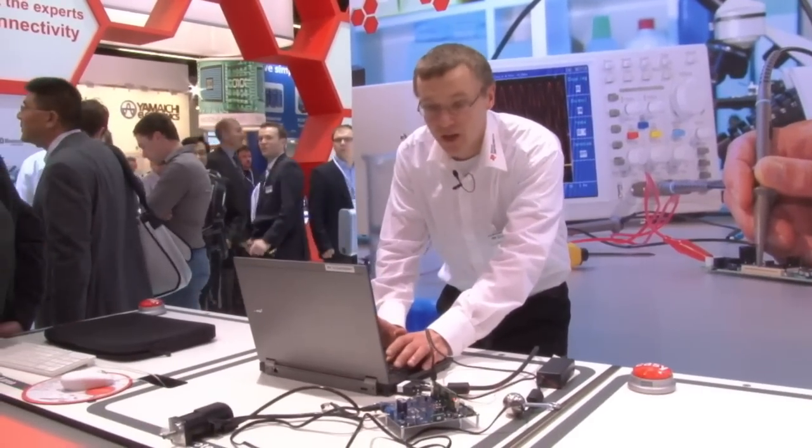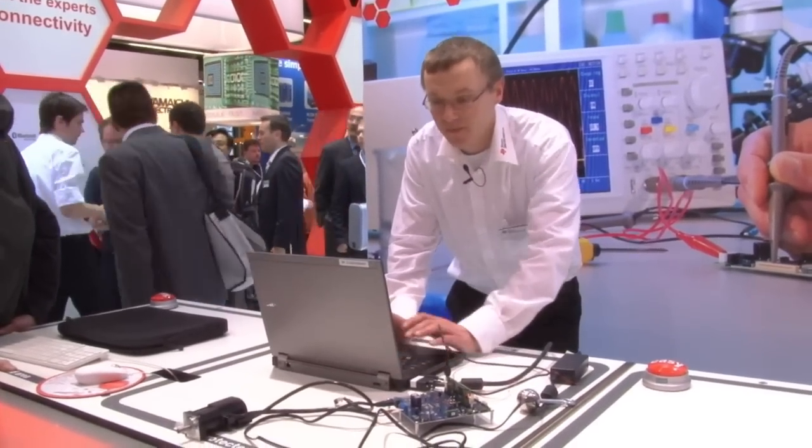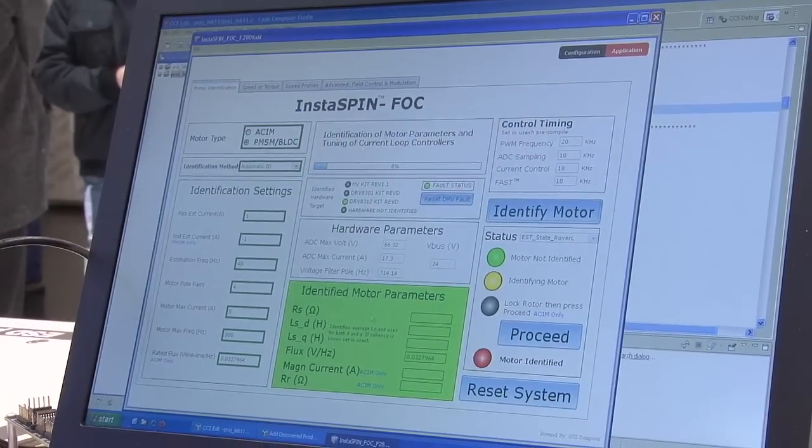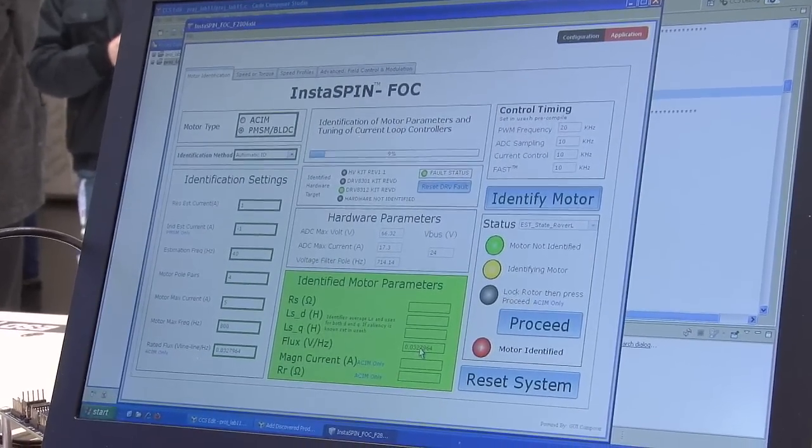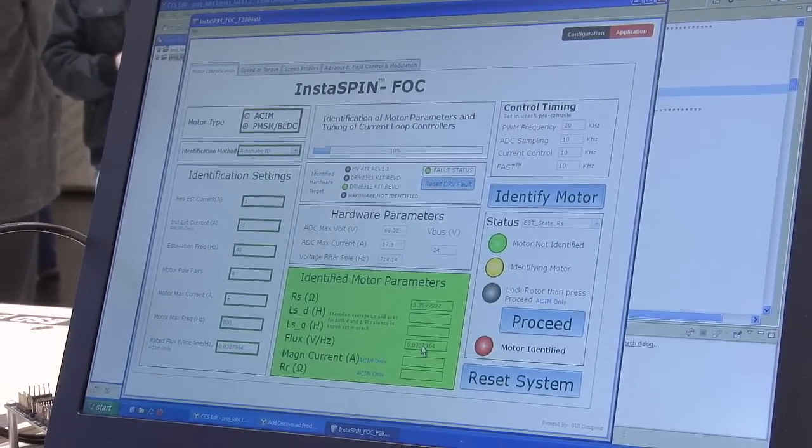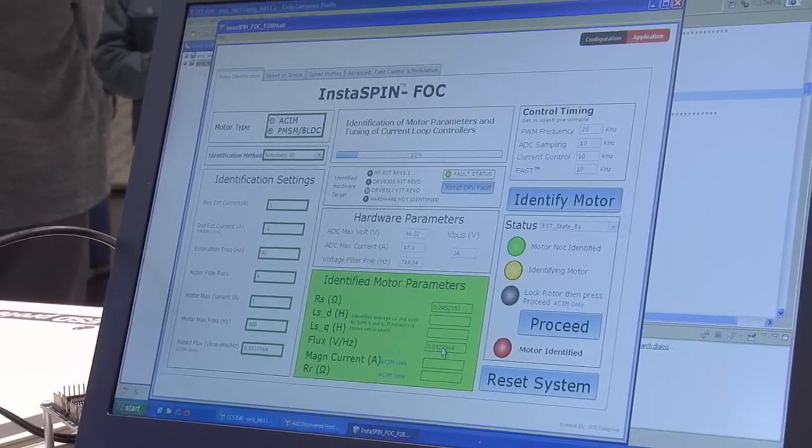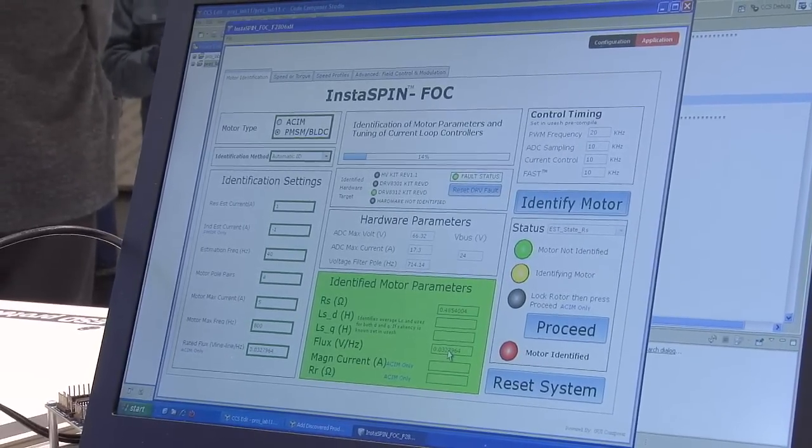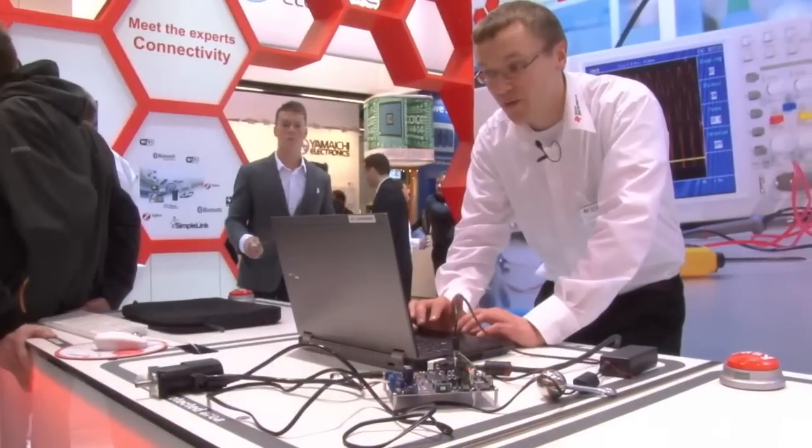First, I would like to start the identification process of the software sensor. What you do is that you have to set up the GUI interface that we have. You see you have different parameters you need to set up. I know that I need this value to properly identify the motor.